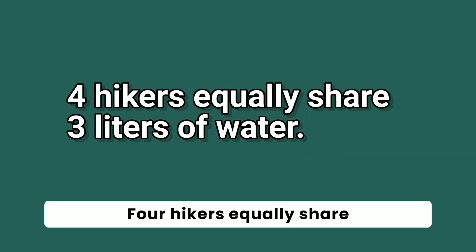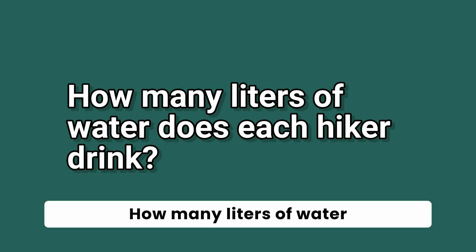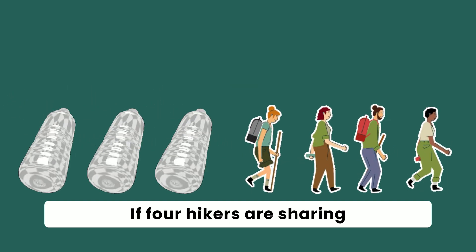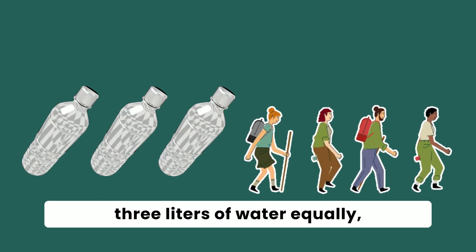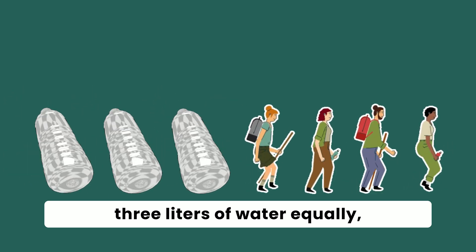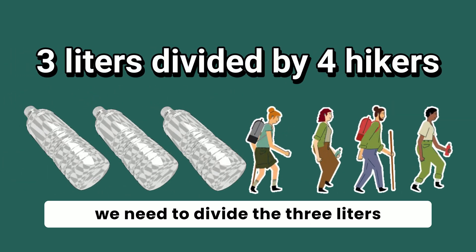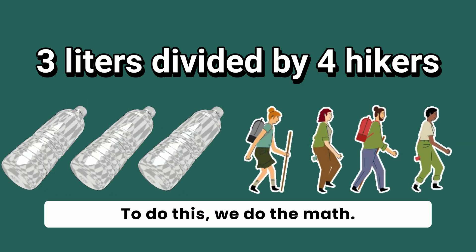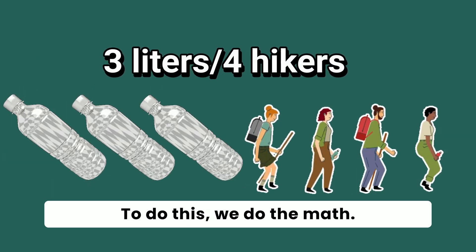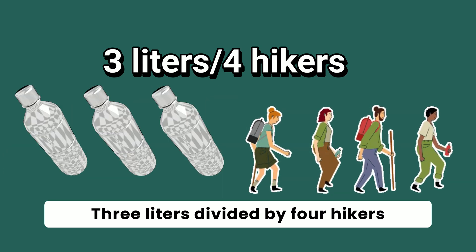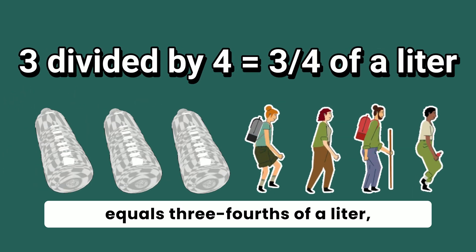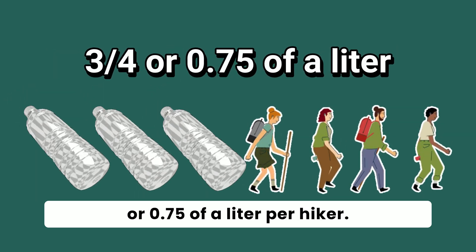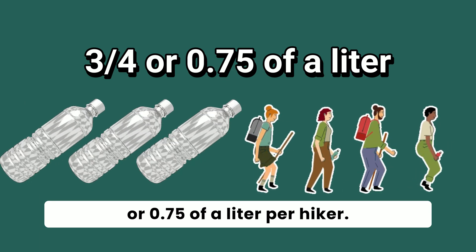Four hikers equally share three liters of water. How many liters of water does each hiker drink? If four hikers are sharing three liters of water equally, we need to divide the three liters by four hikers. Three liters divided by four hikers equals three-fourths of a liter, or 75 hundredths of a liter, per hiker.